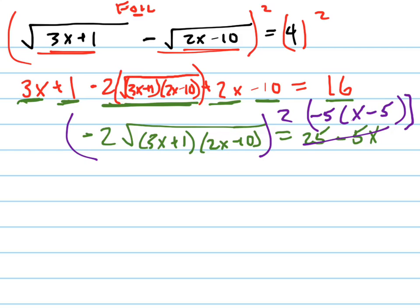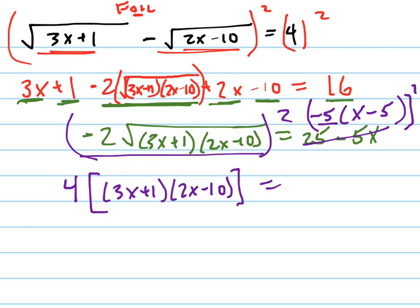And so I'm going to square both sides of the equation. When I square this left side, I'm going to get 4 times 3x plus 1 times 2x minus 10. When I square the right side, I'm going to get 25, that negative becomes a positive, times, I'll go ahead and foil out the x minus 5, that would be x squared minus 10x plus 25. This is where your algebra skills have to be very good in order to not make silly mistakes on these problems.